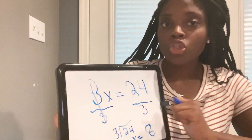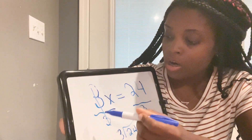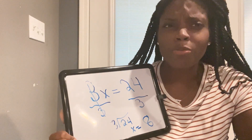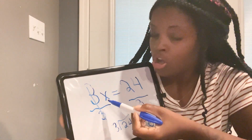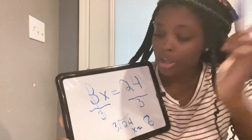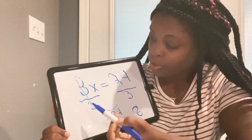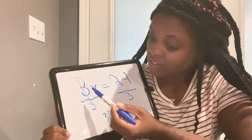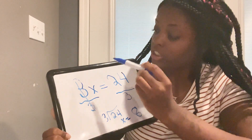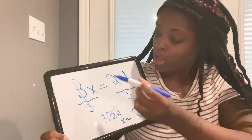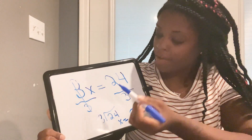24 over 3 gives me 8. So what I did: 3x equals 24 — you divide the 3 by itself because x is the unknown value. We want to get the x by itself, so we divide both sides of the equation by 3. The 3 and 3 cancel each other out and you're left with x equals 24 over 3, which gives you x equals 8.